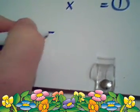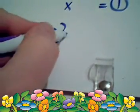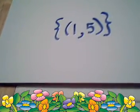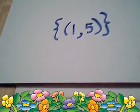What that means in terms of geometry is that if you drew these two lines, they would intersect exactly one time and their point of intersection would be the ordered pair 1 comma 5.